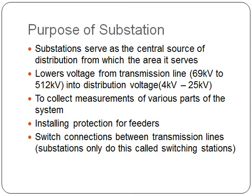Substations generally serve as the central source of distribution for the area they serve. A substation lowers voltage from the transmission line, which is usually from 69 kV to 512 kV, into distribution voltage, which ranges from 4 kV to 25 kV.